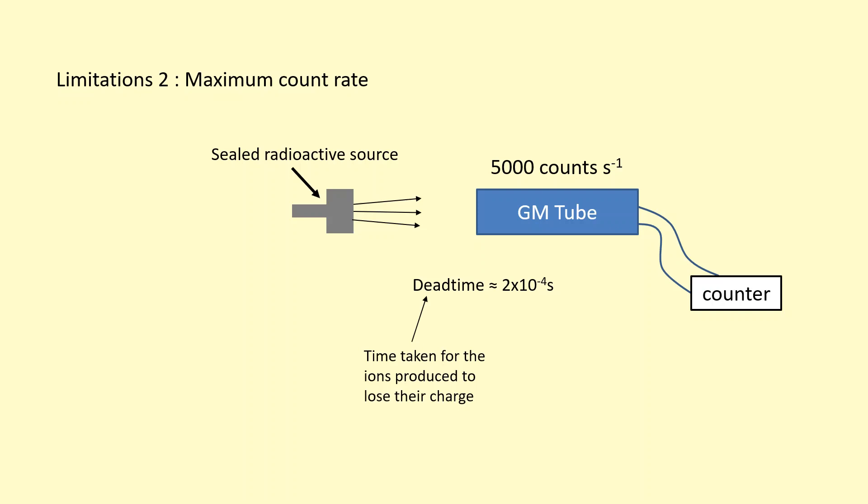So because of this, the maximum count rate is limited to 5,000 counts per second, typically for a GM tube.